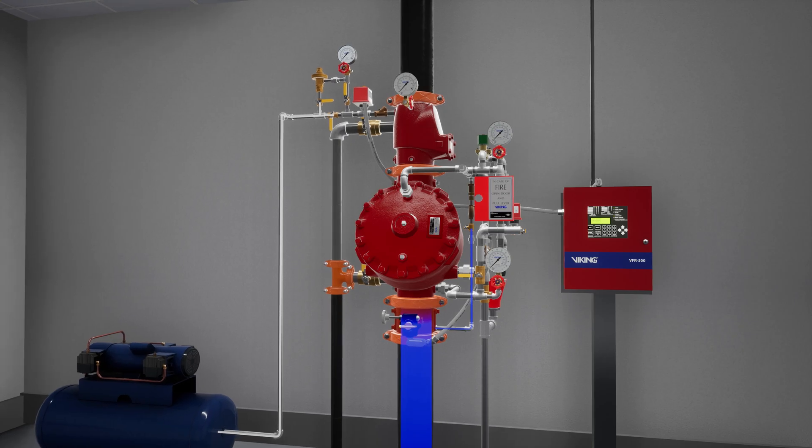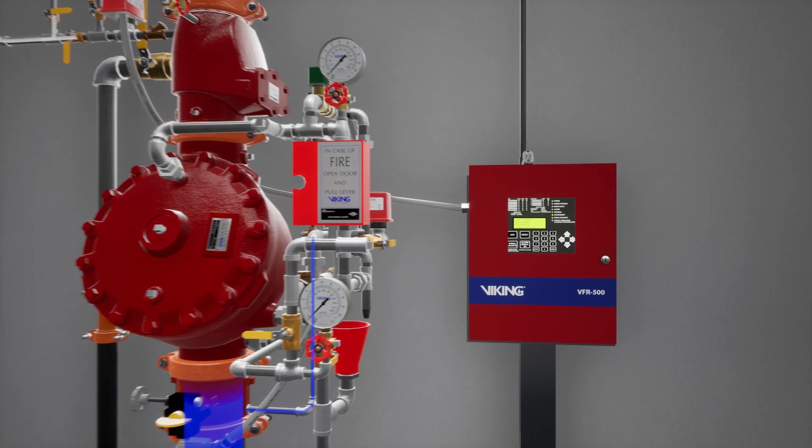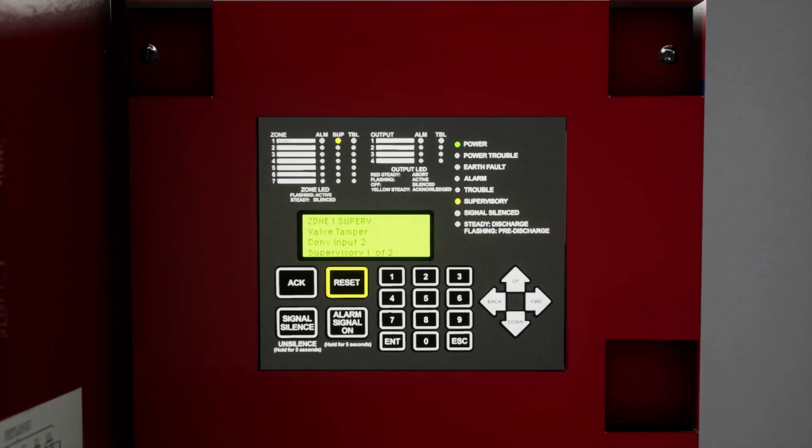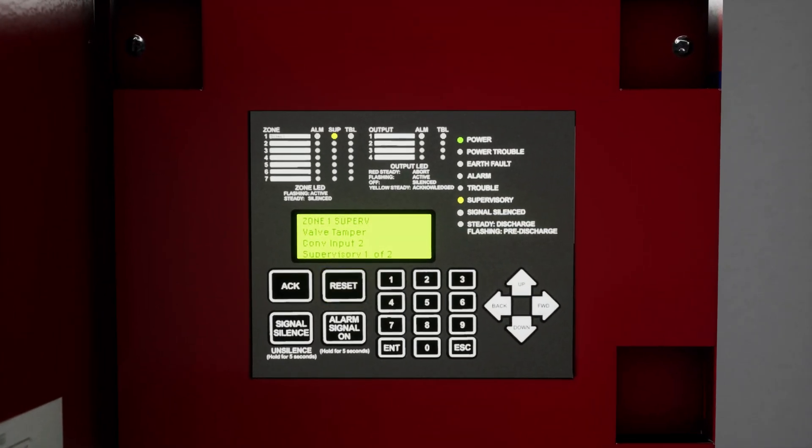Before we start, let's reset the panel to ensure the electric solenoid is closed. While this isn't required, we are going to silence the alarm panel. Press the silence button on the VFR 500 release control panel.